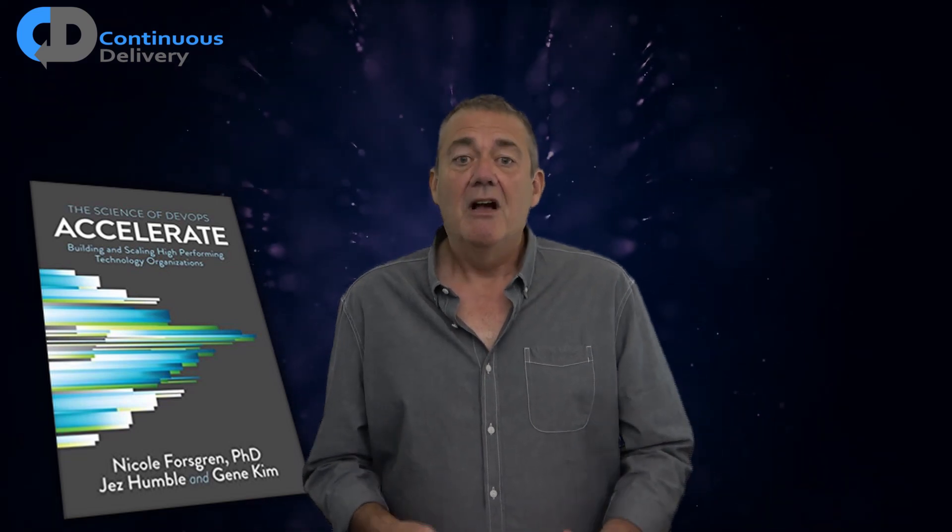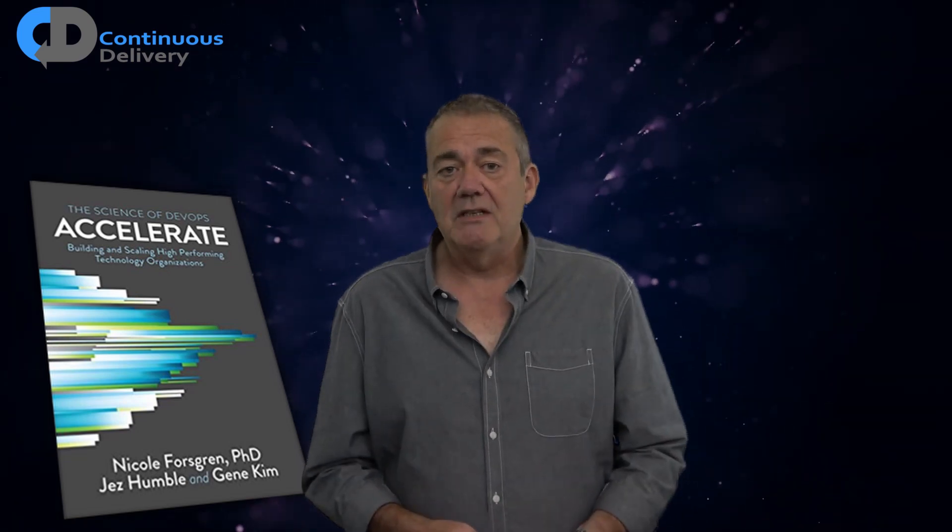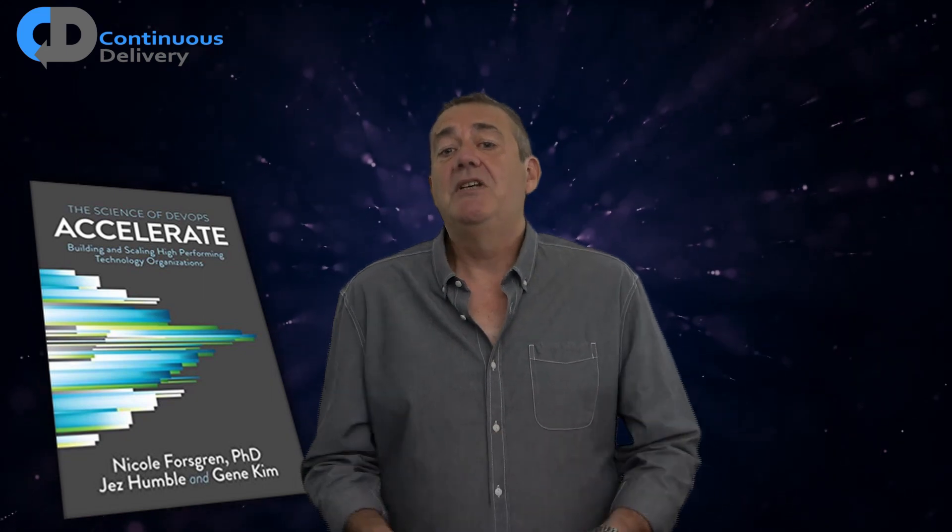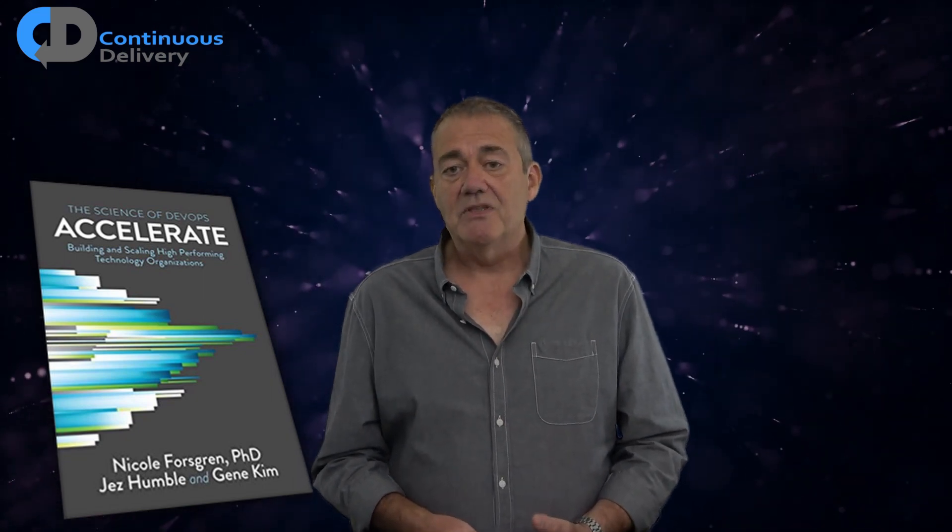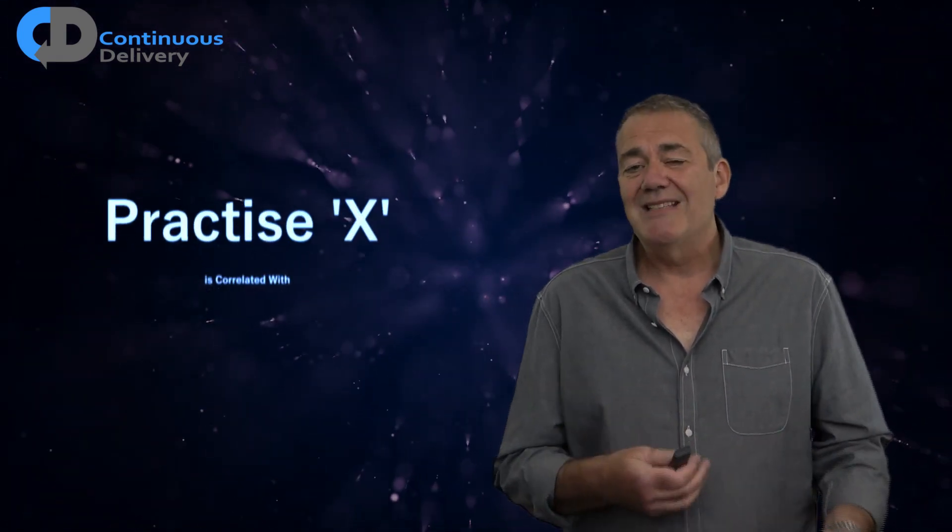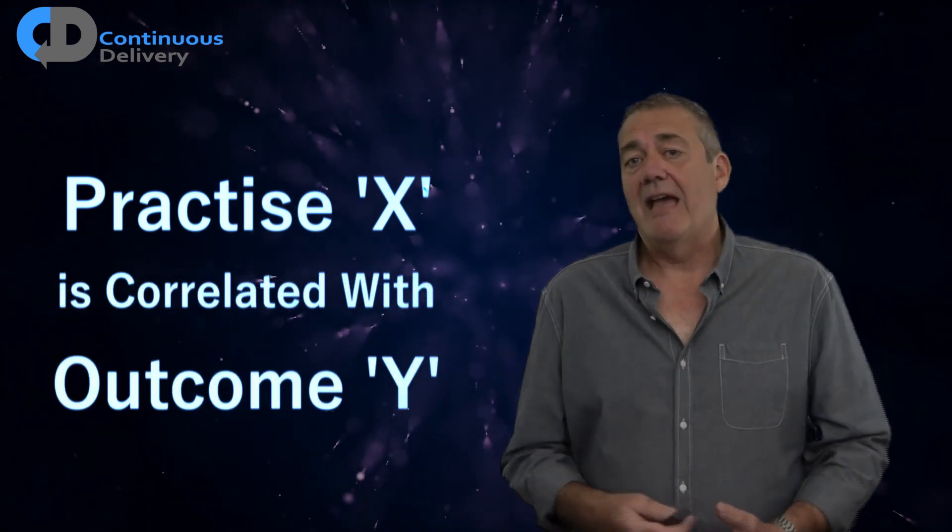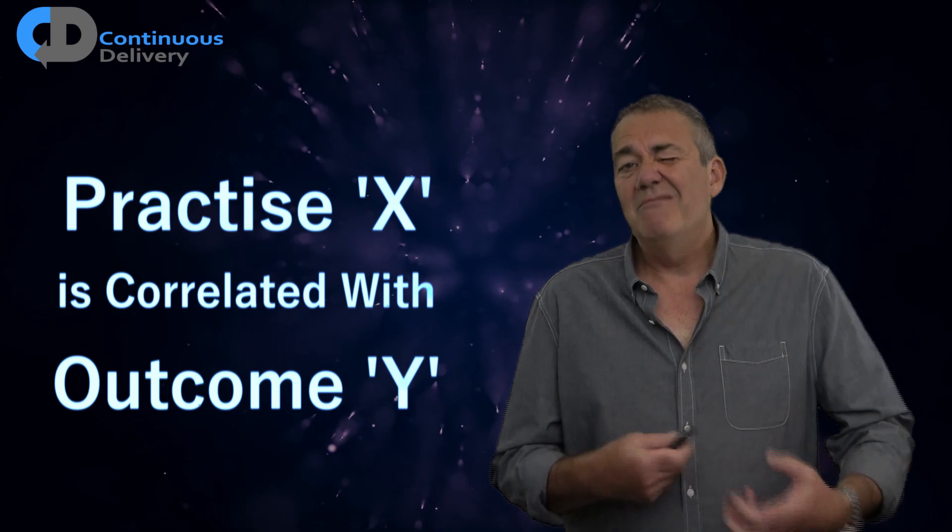The State of DevOps report and the fantastic Accelerate book that accompanies it are important things, important progress for our industry. They provide evidence of a correlative model that allows us to make certain predictions about the behavior of software development teams and their likelihood of success. I like the fact that these words are carefully couched. The authors don't over-claim. They don't claim that X causes Y or that do X and you will get Y. Rather, their claim is that the evidence statistically demonstrates that if you practice X, then it's related to the outcome of Y. If you do X, you're more likely to get Y. There's no golden ticket.